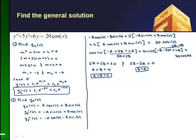And now I can write my particular solution, yp of x, is equal to 2 cosine x plus 2 sine x. So now I have my homogeneous part and my particular part.